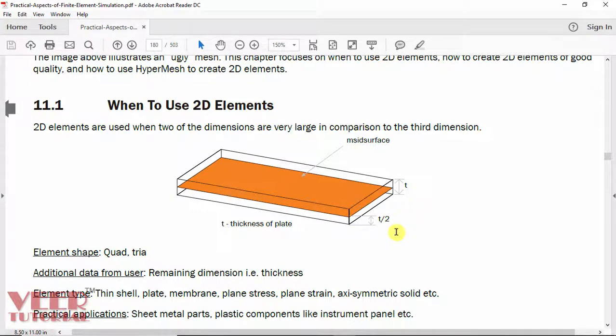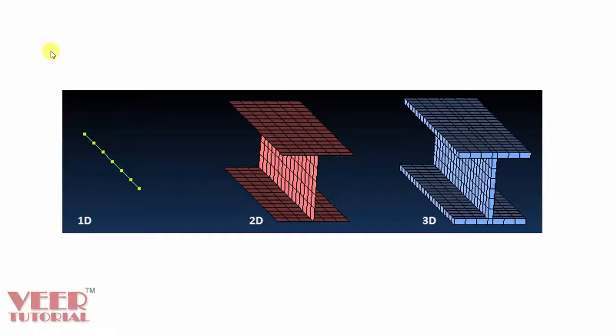Mid-surfacing is very useful in case of sheet metal components and plastic components. It is highly recommended for components where thickness is very less. To understand it more deeply, let us look at this picture, which shows 1D meshing, 2D meshing, and 3D meshing.